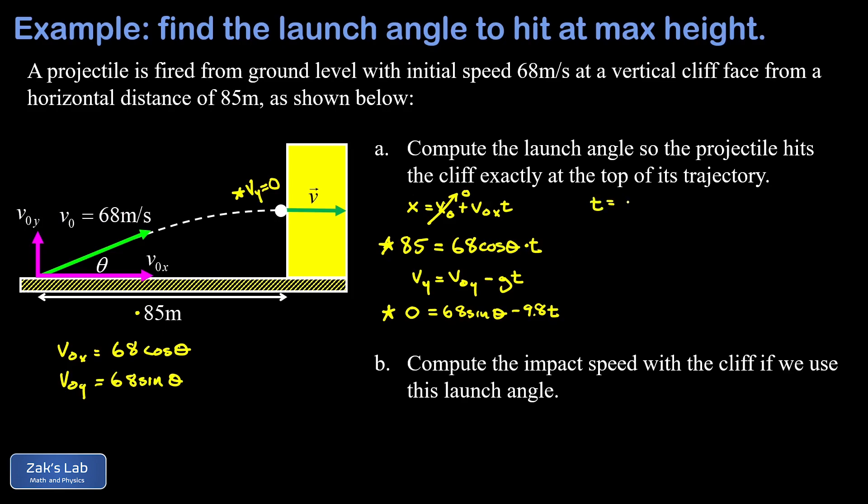When I solve the y equation for t, I'm just going to add 9.8 t to both sides and then divide by 9.8. I'll go ahead and combine the numbers out in front of the sine function, so that's 68 divided by 9.8, and I'll just keep a lot of precision as I go here. So this gives me 6.939 times the sine of theta.